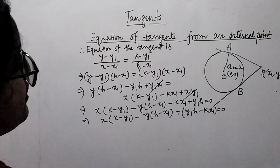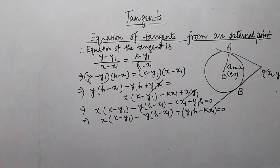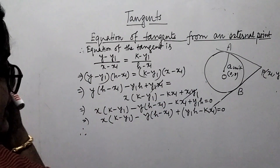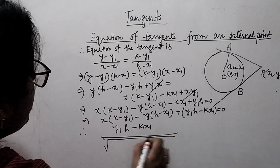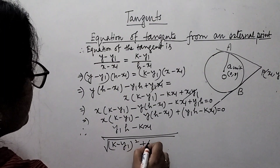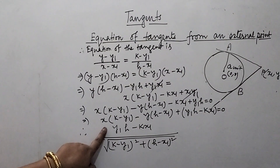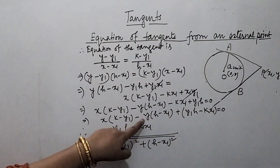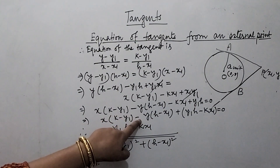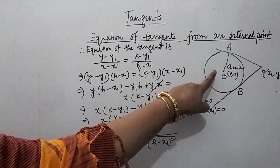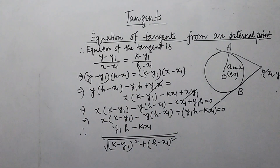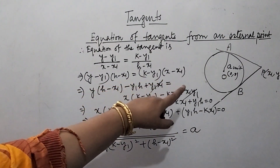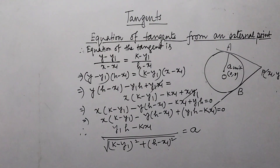The length of the radius equals (y₁h − kx₁) / √[(k − y₁)² + (h − x₁)²]. This length must equal a, since the equation of the circle is x² + y² = a². Squaring both sides: (y₁h − kx₁)² = a²[(k − y₁)² + (h − x₁)²].